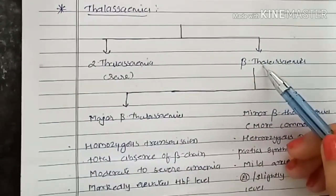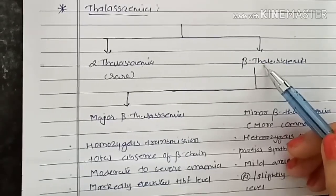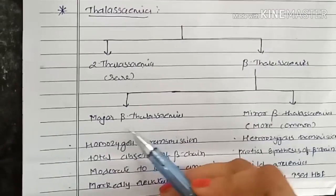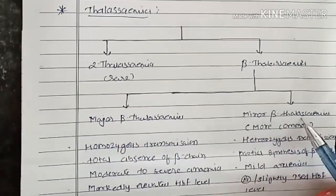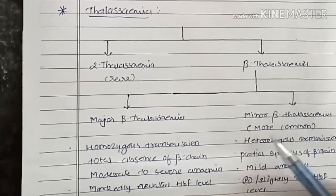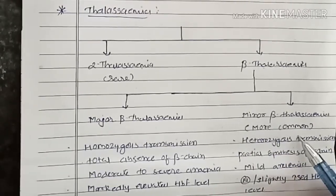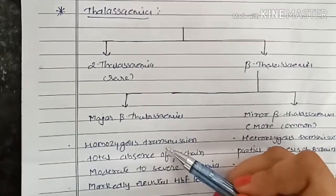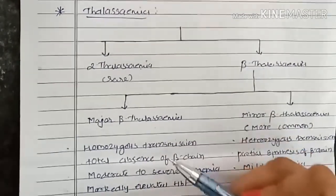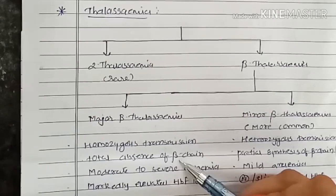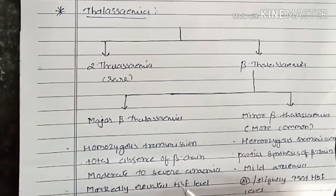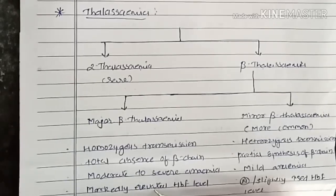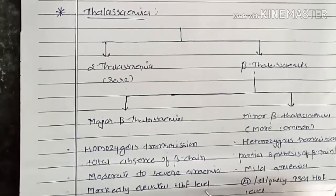Beta thalassemia where beta chain of globin is affected. It is of two types: major beta thalassemia and minor beta thalassemia. Minor beta thalassemia is much more commonly found. In major beta thalassemia, it is due to homozygous genetic transmission. There is total absence of beta chain and moderate to severe anemia. Markedly elevated HbF level will be found.